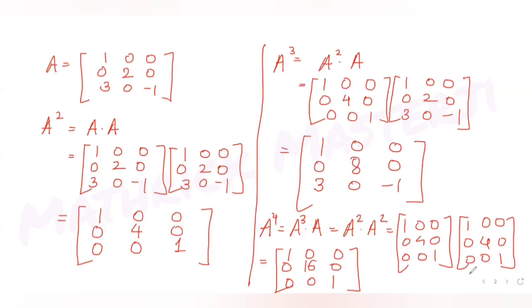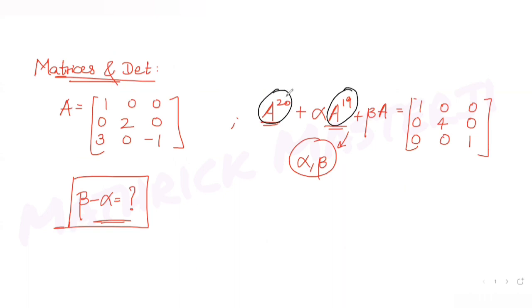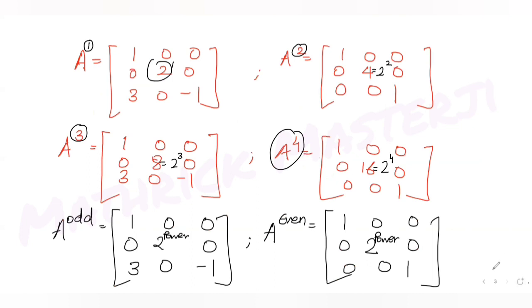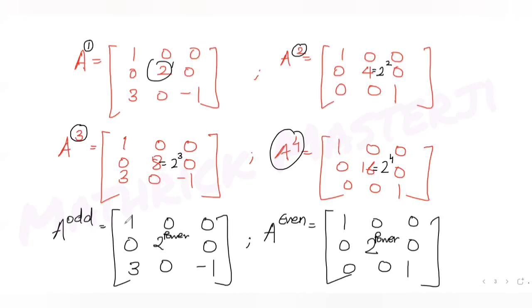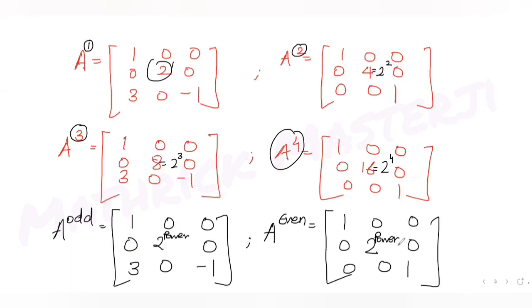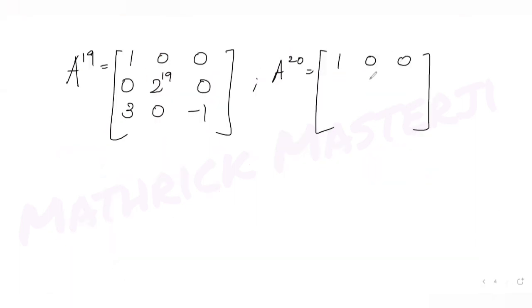Using this pattern, A raised to 19 — since 19 is odd — is 1 0 0 / 0 (2 raised to 19) 0 / 3 0 -1. And A raised to 20 — since 20 is even — is 1 0 0 / 0 (2 raised to 20) 0 / 0 0 1. Now let's substitute these into our equation.